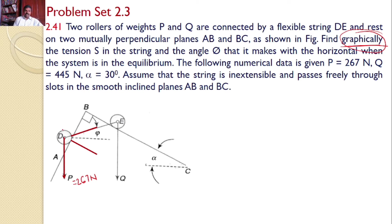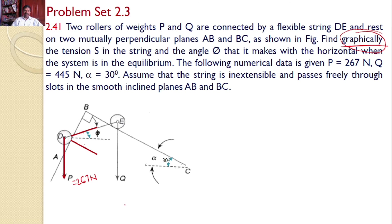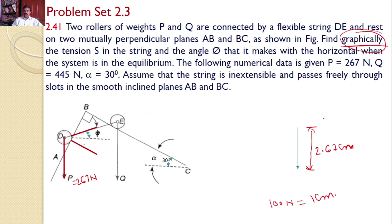Since roller D is in equilibrium, all three forces form a closed polygon — a triangle. So let us draw all three forces to scale to find S and phi. This angle is given as 30 degrees, and phi is what we want to find. I have drawn a line parallel to the vertical representing force P, with magnitude 267 N, drawn as 2.67 cm using the scale 100 N = 1 cm — so a 2.67 cm line vertically downwards.